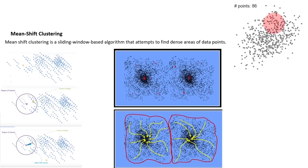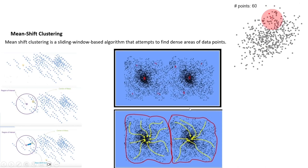Mean-shift clustering is another widely used clustering method. It is a sliding window-based algorithm that attempts to find the dense areas of data points. Unlike k-means, we don't need to know the number of clusters in advance — but we do need to know the radius of the search circle.